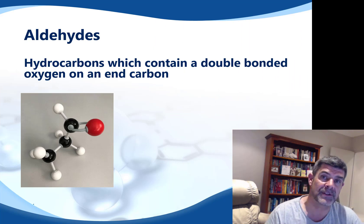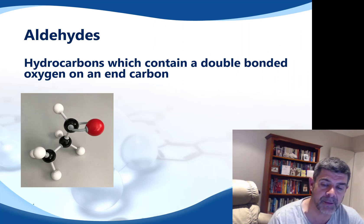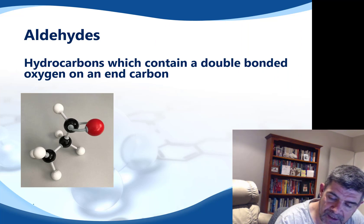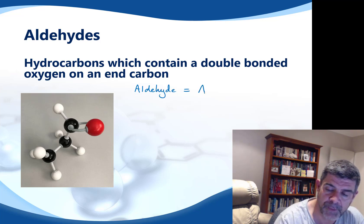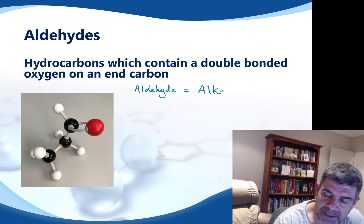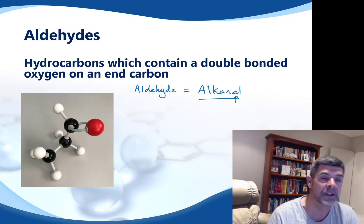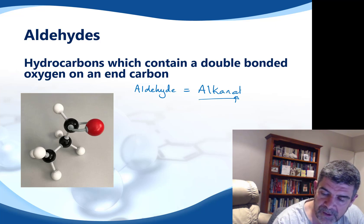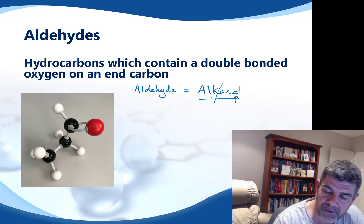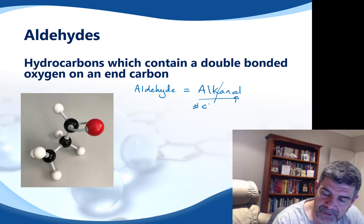Aldehydes and ketones are both common names for these groups that we need to remember when naming. Most importantly, the definition: hydrocarbons that contain a double-bonded oxygen on an end carbon are aldehydes. Aldehyde is the common name. The more correct IUPAC name is alkanal — very similar to the alcohols, only this letter has changed from an O to an A. When naming them, we have a prefix and a suffix: the prefix is the number of carbons and the suffix is the functional group.